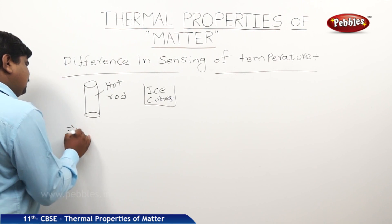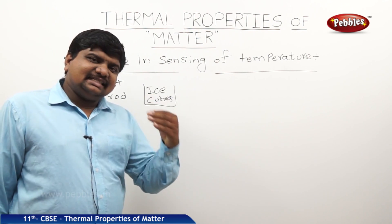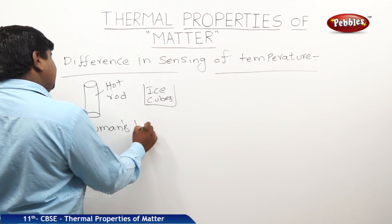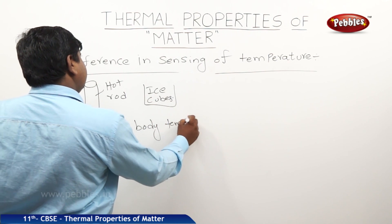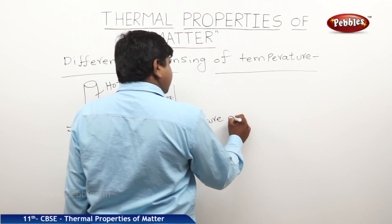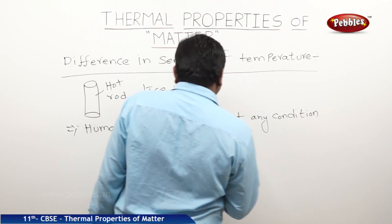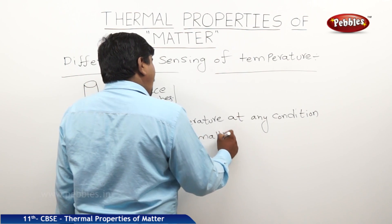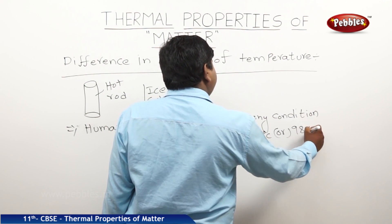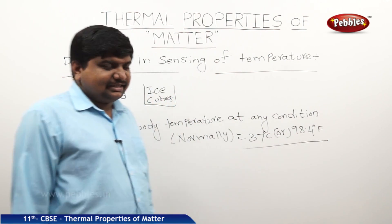We know that the human body's general temperature in any season is approximately 37 degrees Celsius or 98.4 degrees Fahrenheit. Afterwards we will discuss what are the Celsius and Fahrenheit scales and their comparison.